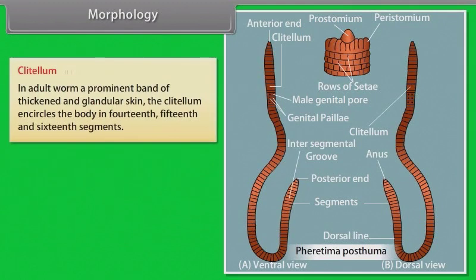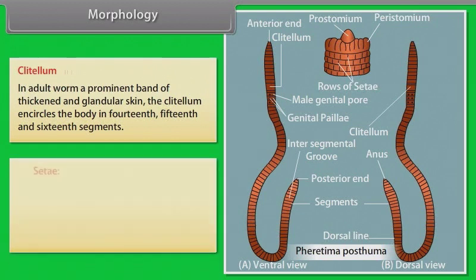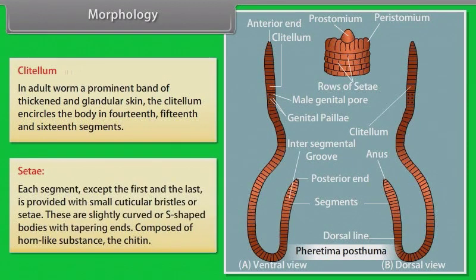Clitellum. In an adult worm, a prominent band of thickened and glandular skin called the clitellum encircles the body in the 14th, 15th, and 16th segments. Setae. Each segment except the first and the last is provided with small cuticular bristles or setae. These are slightly curved or S-shaped bodies with tapering ends, composed of chitin.